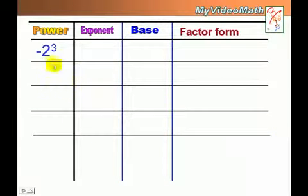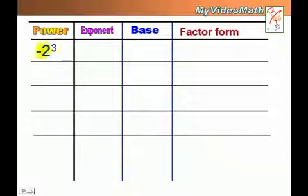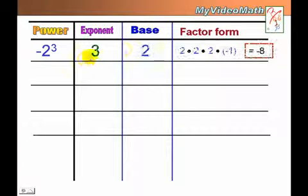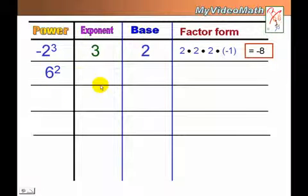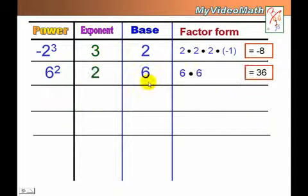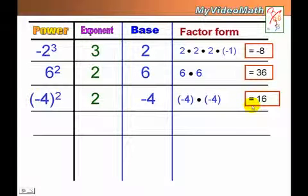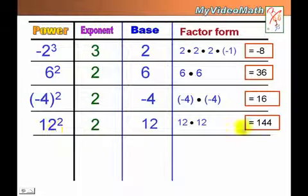Let's look at more examples. Negative 2 to the third power — the exponent is 3 and the base is 2 with a negative, meaning we multiply by negative 1, so the answer is negative 8. For 6 squared: exponent 2, base 6, and 6 times 6 equals 36. For negative 4 squared: exponent is 2, base is negative 4, and the answer is 16. For 12 squared: exponent is 2, base is 12, and the answer is 144.